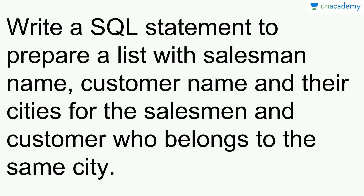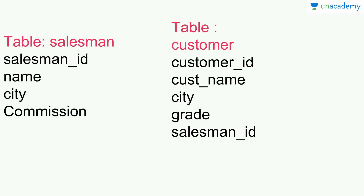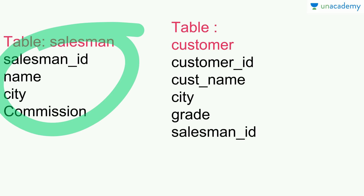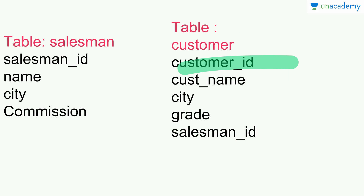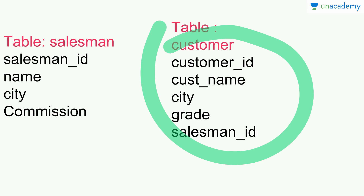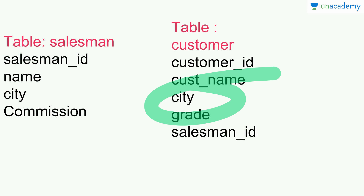A pretty simple one: write a SQL statement to prepare a list of salesman name, customer name and their city for the salesman and customer who belong to the same city. So we have two tables — salesman and customer. We have to find those customers and salesman who are in the same city, joining these tables through salesman ID and checking whether the city of both is the same or not.